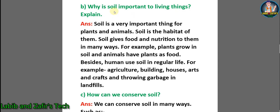Now B: why is soil important to living things? Explain. Answer: soil is a very important thing for plants and animals. Soil is the habitat of them. Soil gives food and nutrition to them in many ways. For example, plants grow in soil and animals have plants as food. Besides, humans use soil in regular life.